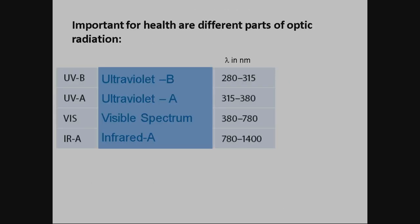What does the body use? The body uses all parts of the optical radiation. We have the UVB portion, which is very important for vitamin D production. We need UVA also — we can put on sun protection, but not more than SPF 10, because we need the UVA for immune modulation. It's very important.